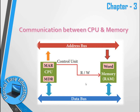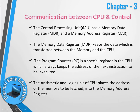The CPU has a Memory Data Register (MDR) and a Memory Address Register (MAR). The MDR keeps the data being transferred between memory and the CPU. The Program Counter (PC) is a special register in the CPU which always keeps the address of the next instruction to be executed.